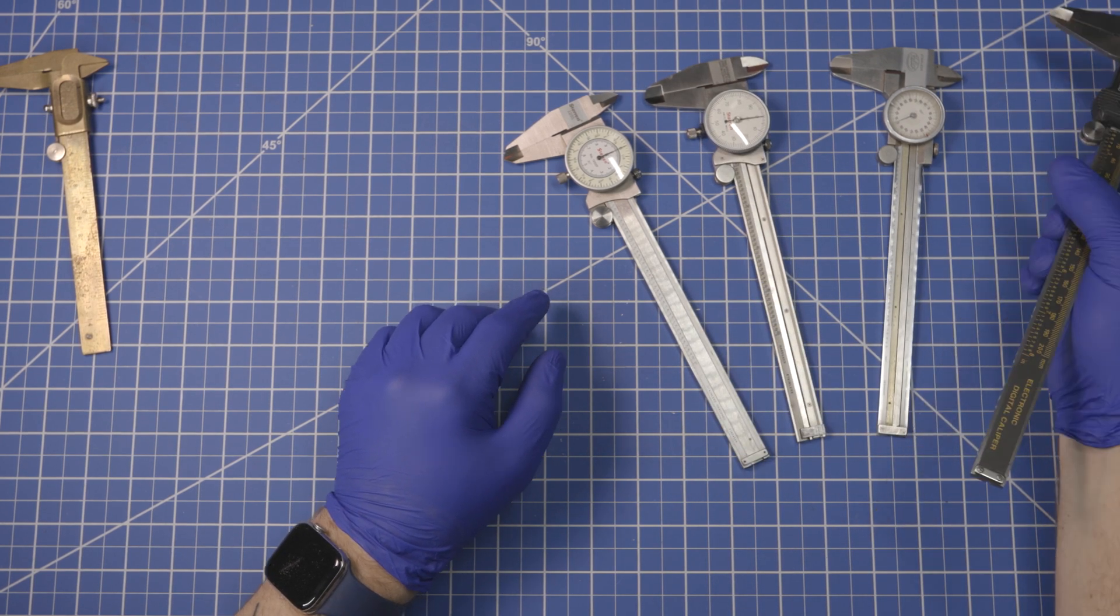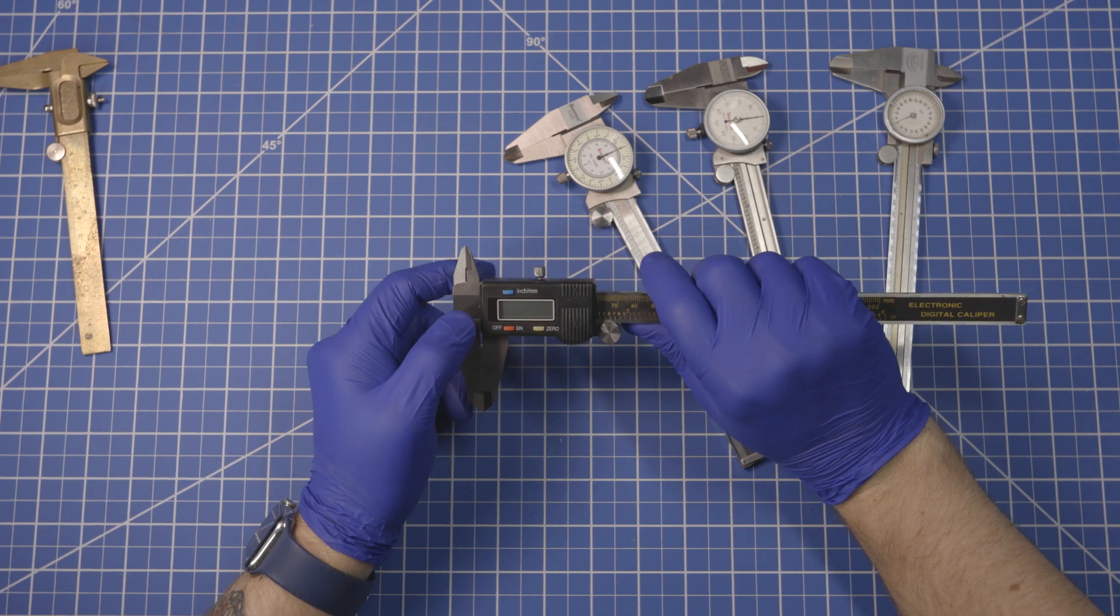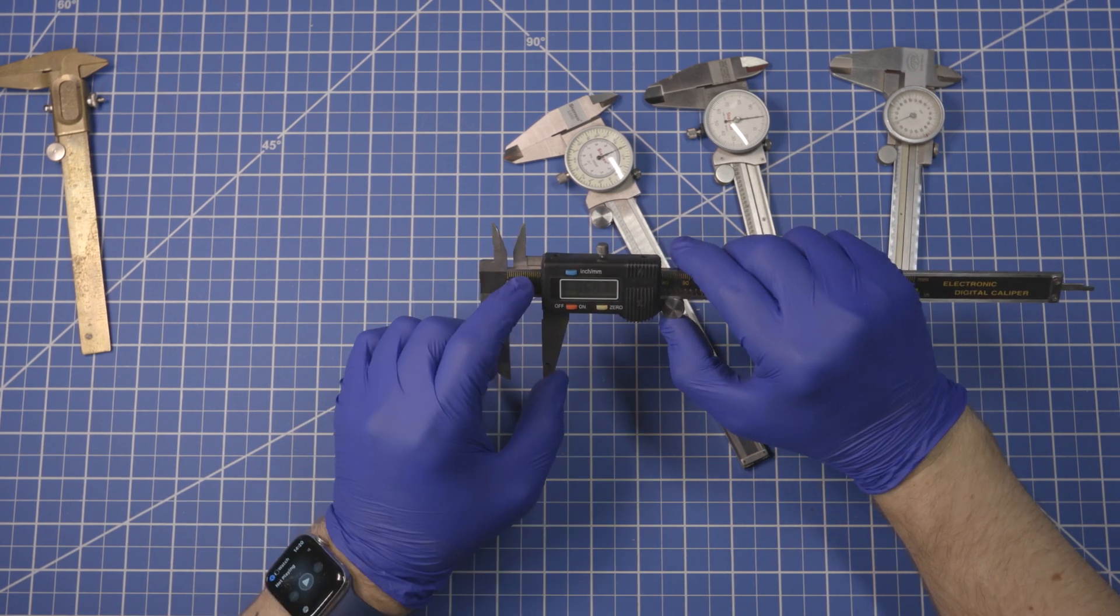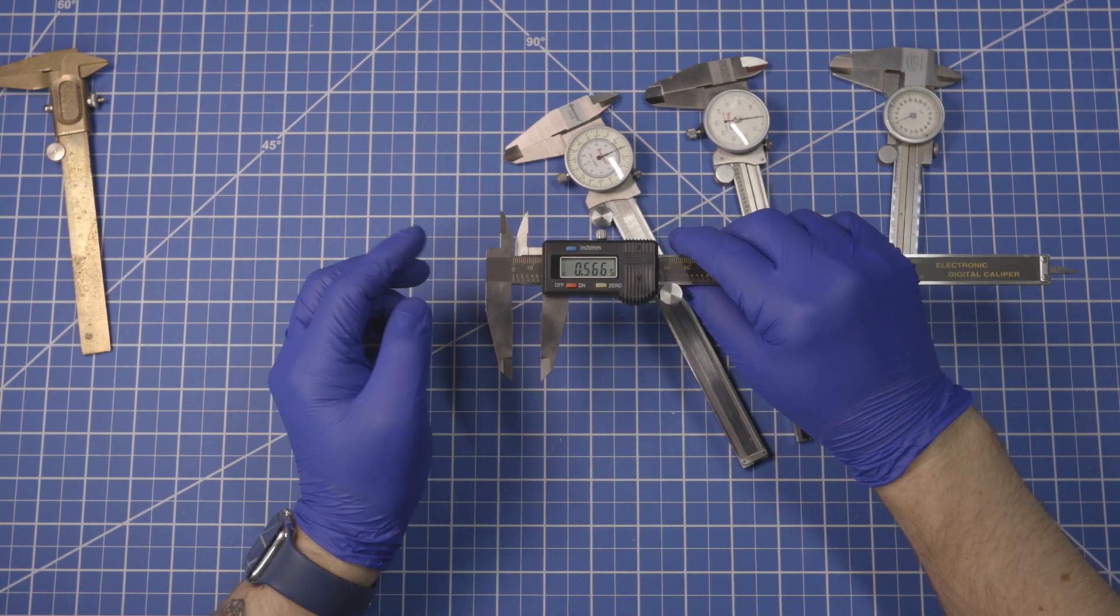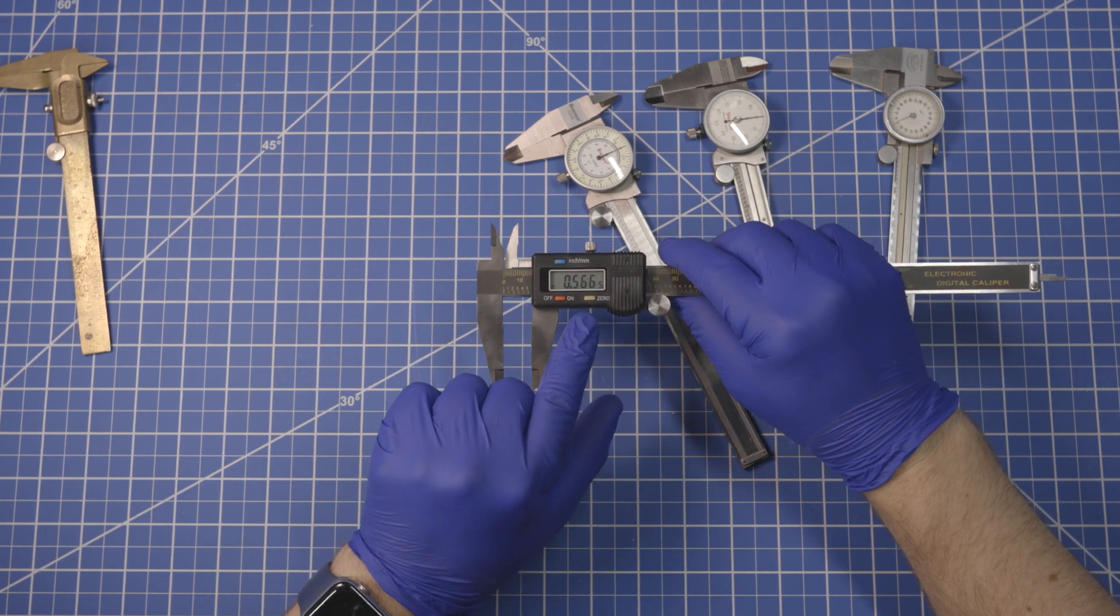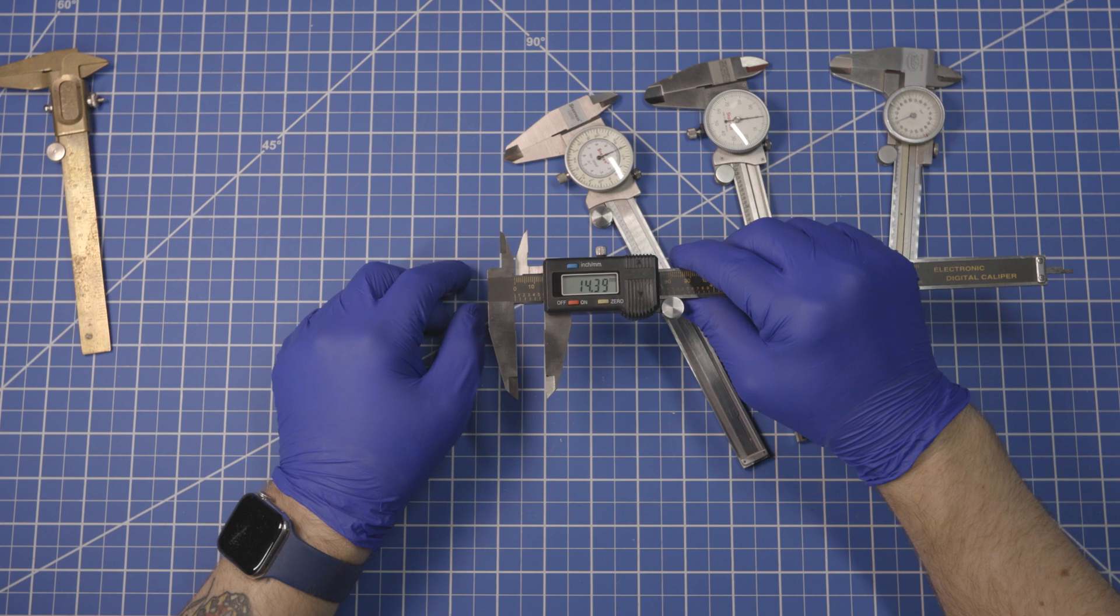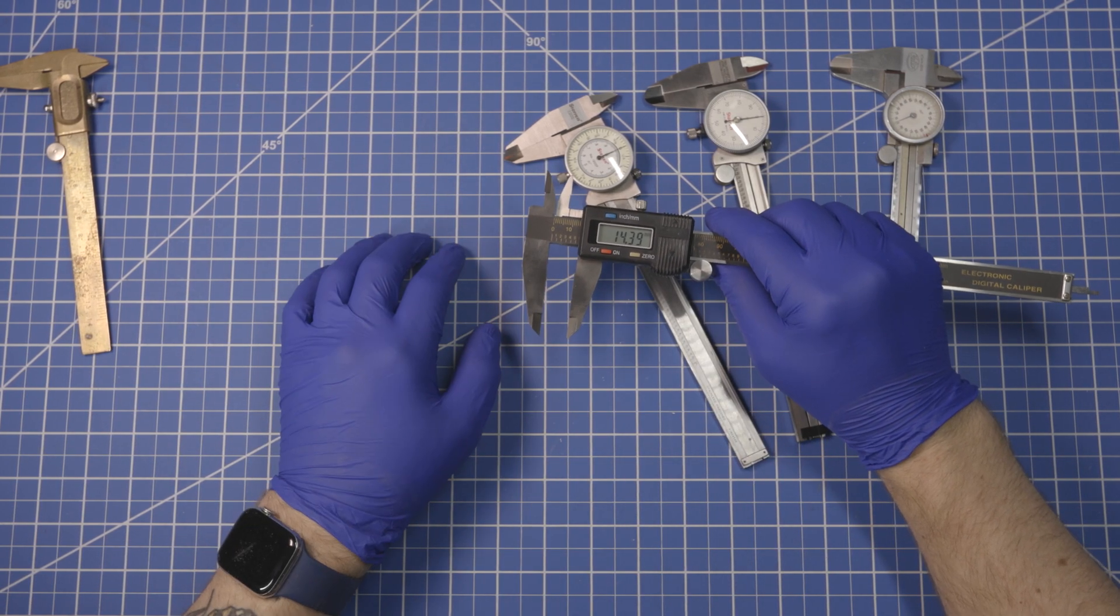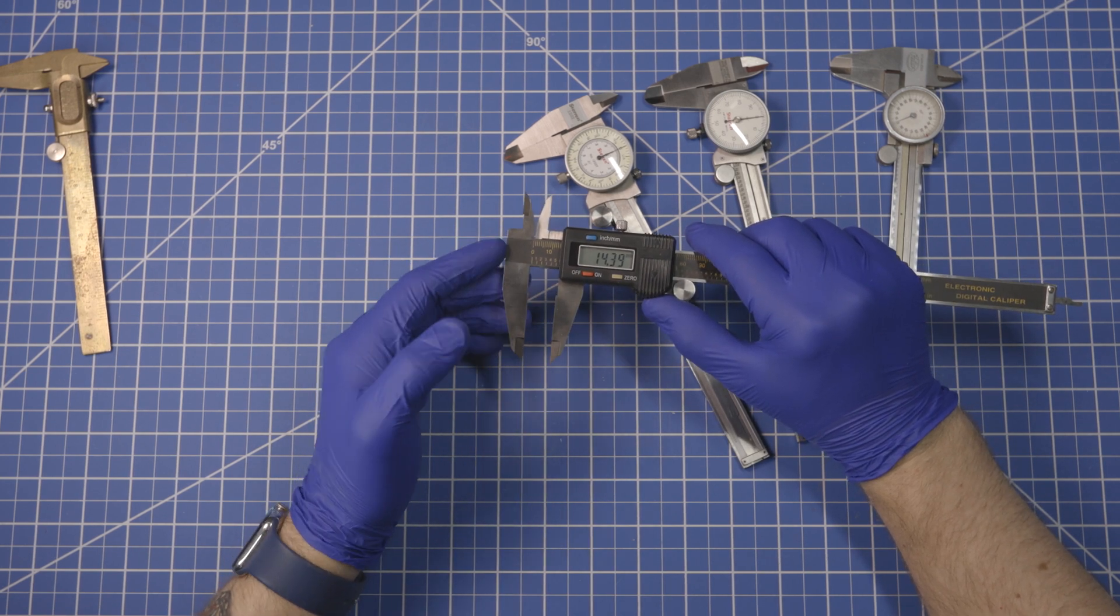And the last thing that these calipers are able to do is not really what they're intended for, but with these digital calipers especially, let's say we wanted to take 0.566, actually 0.5665, and convert that to millimeters. Well, that's 14.39 millimeters. If you need to translate between other tools and things like that, this is a very quick way to convert from metric to imperial.